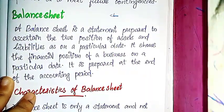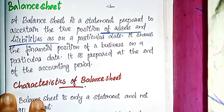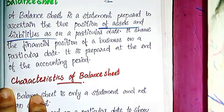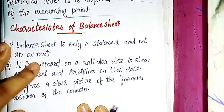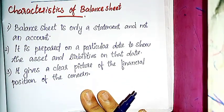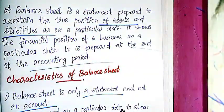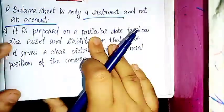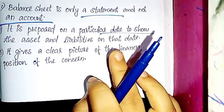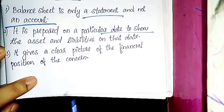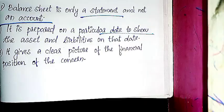The balance sheet is a statement showing the true position of assets and liabilities in an organization. It shows the financial position of a business on a particular date and is prepared at the end of the accounting period. Characteristics of a balance sheet: it shows assets and liabilities clearly and gives a complete picture of the financial position.